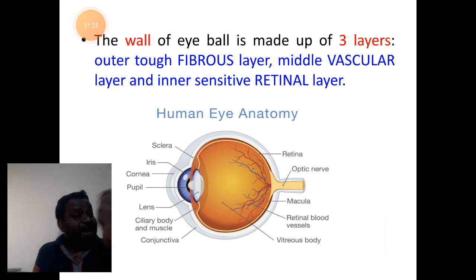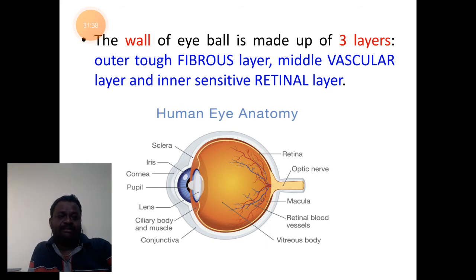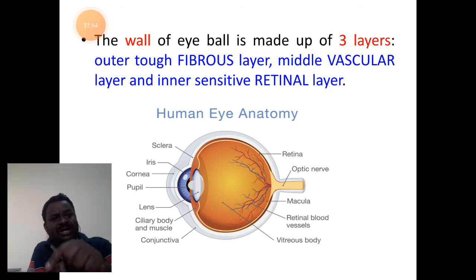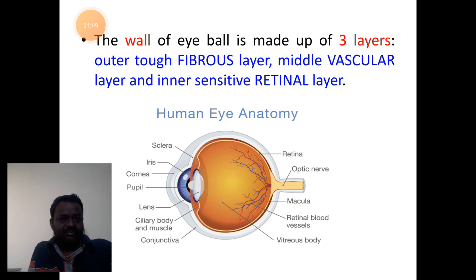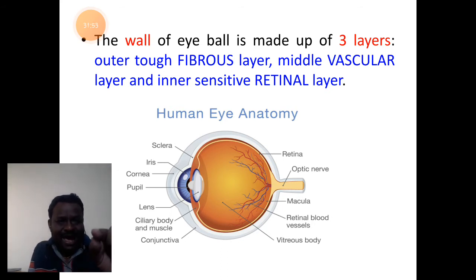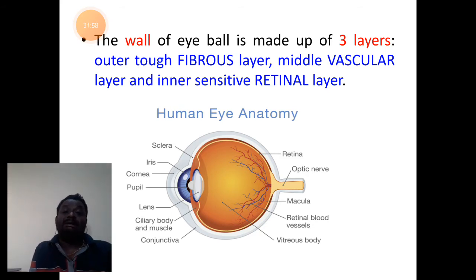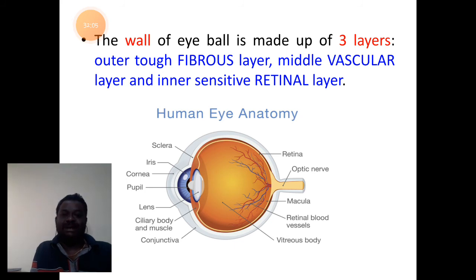The arrangement of these three layers is different. The totally light gray appearance of the round margin refers to the fibrous layer. The middle yellow-colored line is the vascular layer. The rest of the portions at the back is called the retinal layer.